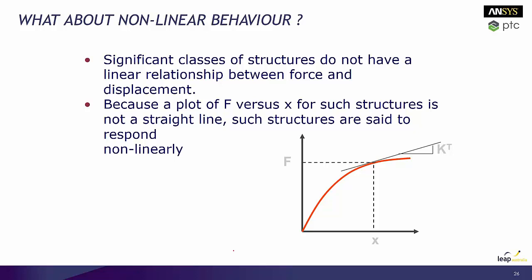That was a linear model, but sometimes your models can have non-linear behaviour. Here we've got a red line showing the response of our structure — as we apply force it will have a certain displacement, but that's not a linear relationship. At each point along that curve there's a certain stiffness, which we call tangent stiffness. This is the characteristic stiffness of the structure at that point in its displacement, so we have to calculate the stiffness at each point as the load is applied.